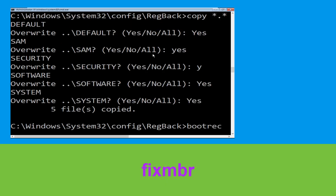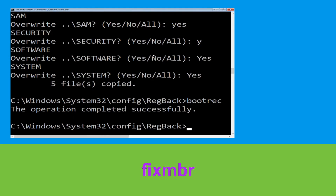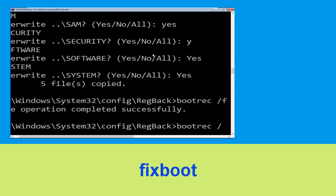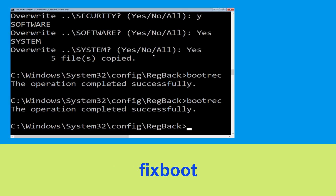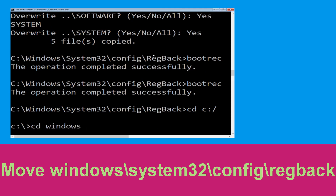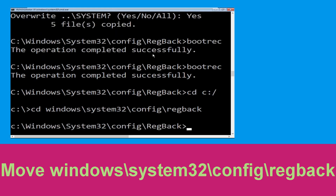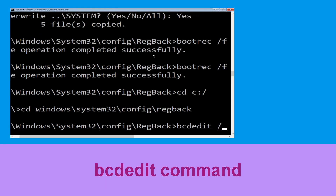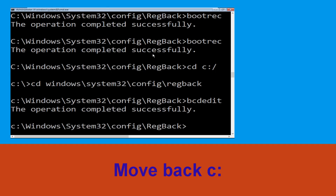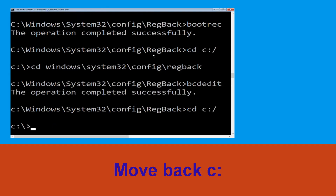Now execute this command: type bootrec /fixmbr and hit Enter. Now execute this command: type bootrec /fixboot and hit Enter. Then type bootrec /scanos. Now execute this command: type cd Windows\system32\config\regback and hit Enter. Now type: bcdedit /export C:\bcd_backup and hit Enter.